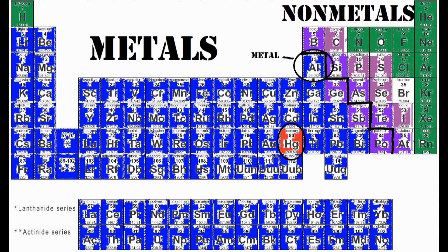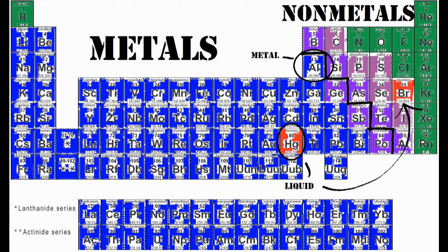Except for mercury, which is a liquid metal — so technically it is a metal, but it's also a liquid. Everything on the left side is a metal, except for mercury, which is a liquid. Oh, and bromine — bromine is also a liquid. Those are the only two liquids on the periodic table.